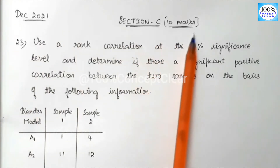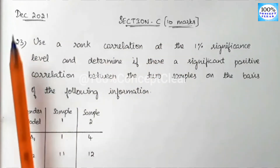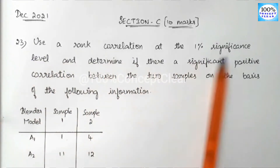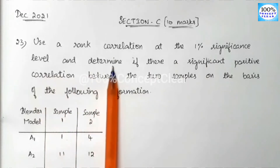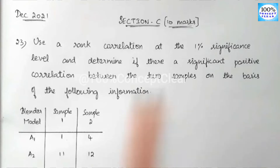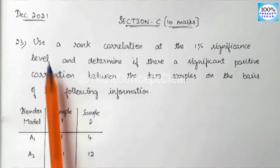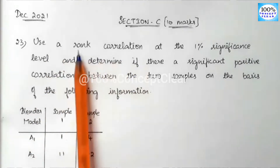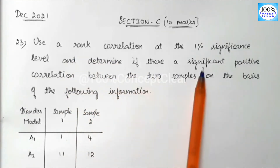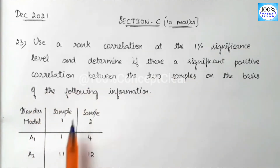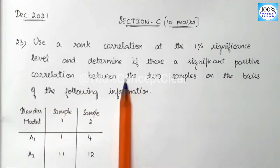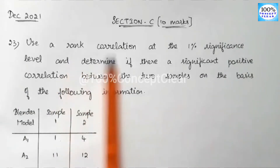We will look at Section C, which is 10 marks. We will look at question 23. The question is: use rank correlation at the 1% significance level and determine if there is a significant positive correlation between the two samples on the basis of the following information.